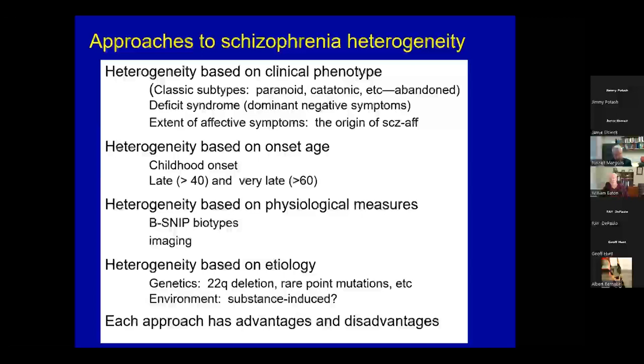There have been a number of approaches to try and address this heterogeneity and split up schizophrenia. One is using clinical phenotypes. The classic phenotypes — paranoid, catatonic, hebephrenic, etc. — have been abandoned as not being helpful at all. The deficit syndrome, pioneered in large part at University of Maryland, describes individuals with dominant negative symptoms. And the origin of schizoaffective disorder was trying to define individuals with more or less affective symptoms. Both approaches continue to be investigated.